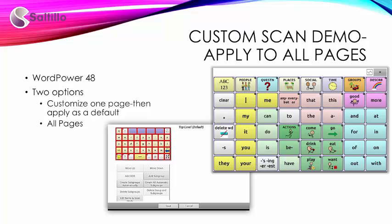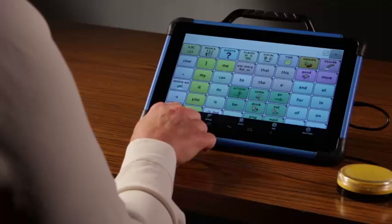If you were to create a new vocabulary or rearrange a current file that would lend itself to a custom scan pattern, you might decide to create a custom scan pattern and apply it to all pages. I will continue this demo using WordPower 48, one switch, leaving it on block pattern from last demo and turning off the auditory prompt. I have not made changes to this file nor am I making a recommendation to use this scanning pattern with this file. I am creating the scan pattern here for demonstration purposes so that you can see the capabilities with the scan editor.